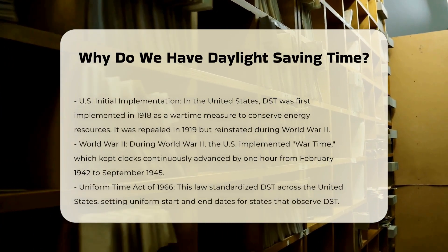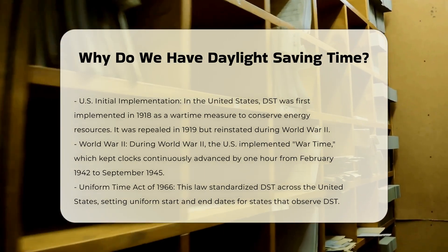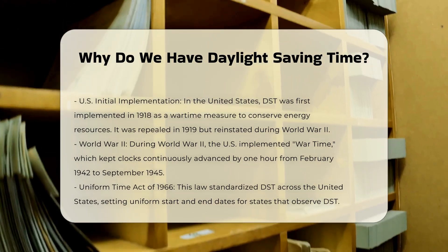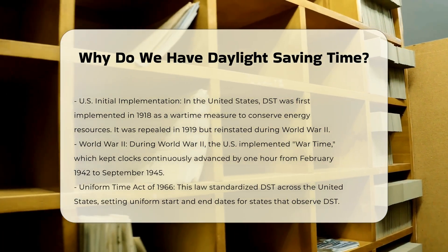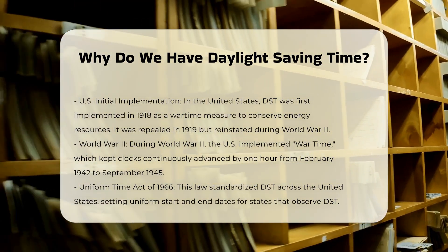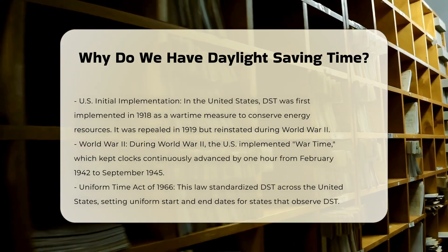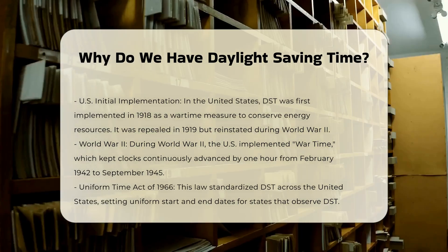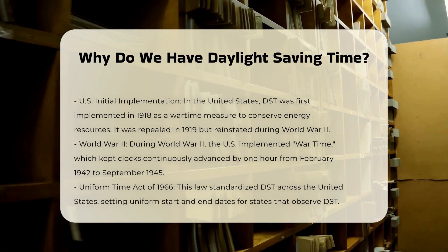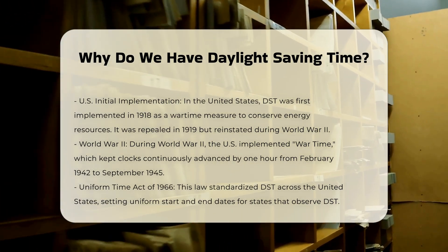According to this law, states that observe DST must do so uniformly, starting and ending on the same dates set by the federal government. The primary goal of DST is to shift the hours of human activity to make the best use of daylight. By setting clocks forward by one hour in the spring, people can enjoy more daylight in the evening after their work day, which is seen as more practical and energy efficient.